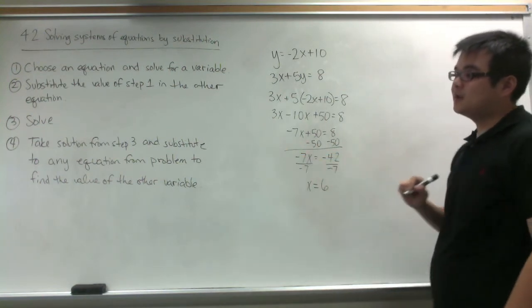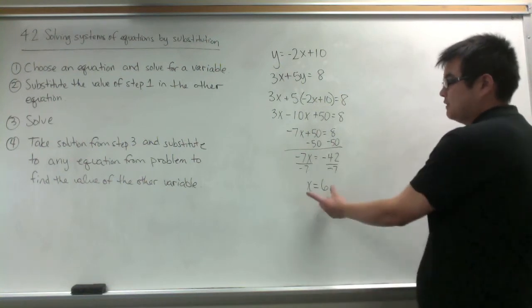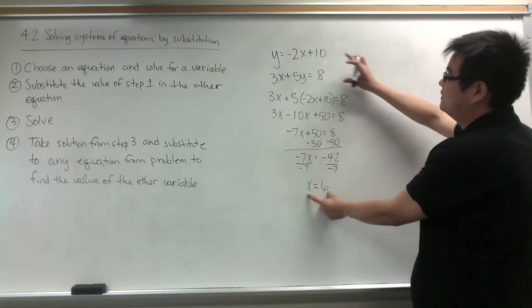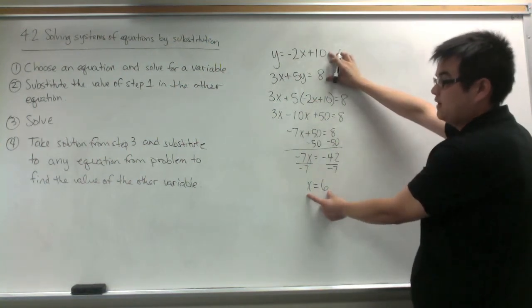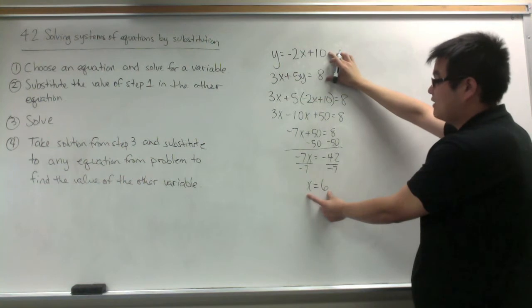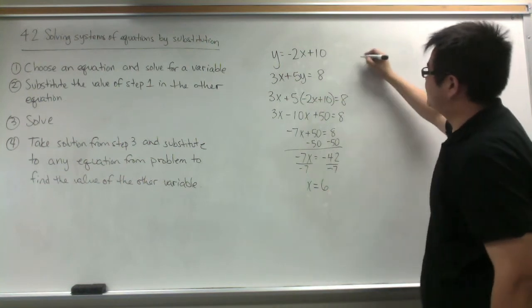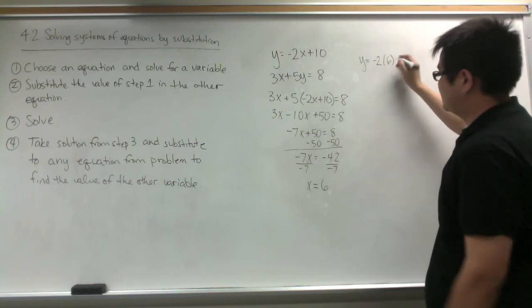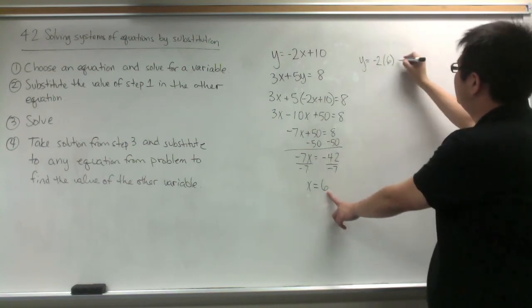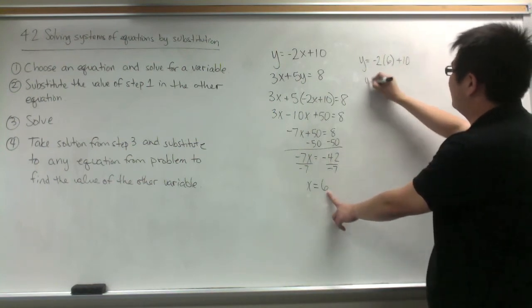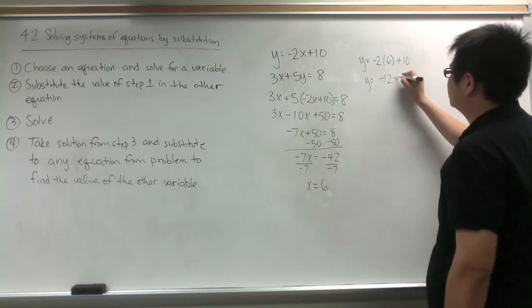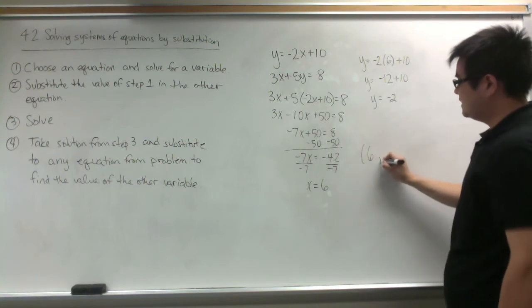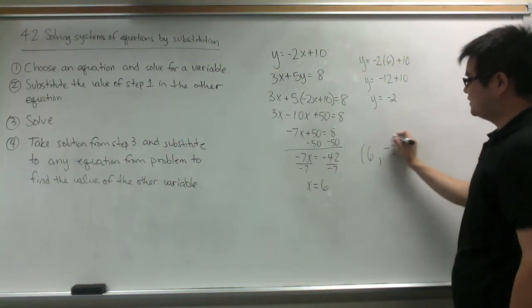Now step 4: take the solution from step 3 — x equals 6 — and substitute it into any equation from the problem, so either equation will be fine, to find the value of the other variable. I'm going to choose the first equation: y equals negative 2 times 6 plus 10. y is equal to negative 12 plus 10, so y is equal to negative 2. The solution is (6, -2).